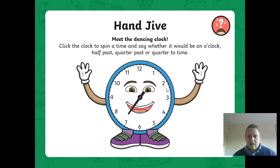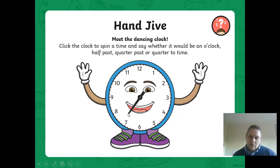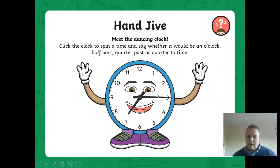Now we've got to guess: is this quarter-past, quarter-to, or half-past, just judging on where the hour hand is? Remember, half-past would be right in between. I don't think it's right in between - it's pointing about here, about halfway between the halfway mark and the seven. So it's going to be quarter-past. Let's see if we're right. So now the minute hand comes up and it shows us - yes, it is quarter-past seven.